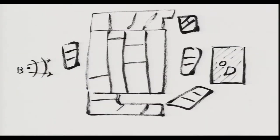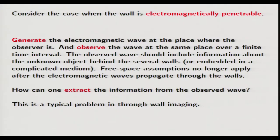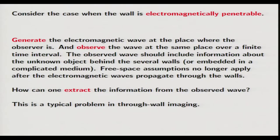The object is acoustically or electromagnetically silent and not moving. We want to use electromagnetic waves, so we assume that the wall is electromagnetically penetrable — meaning an electromagnetic wave can penetrate through the wall. We generate the electromagnetic wave at the place where the observer is, send it, and observe the wave at the same place over a finite time interval. The observed wave should include information about the unknown object behind the wall or embedded in a complicated medium.